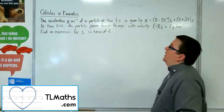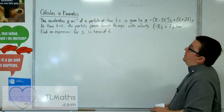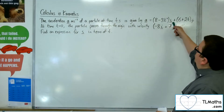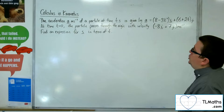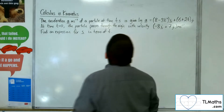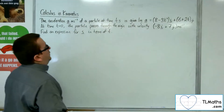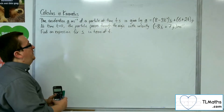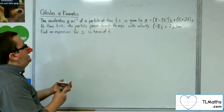In this video, the acceleration a metres per second per second of a particle at time t seconds is given by a equals 8 minus 3t squared i plus 6 plus 2t j. At time t equals 0, the particle passes through the origin with velocity minus 8i plus 7j metres per second. Find an expression for s in terms of t.